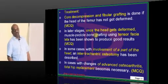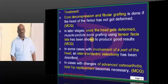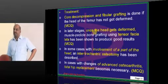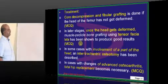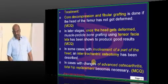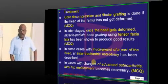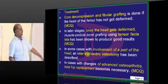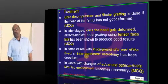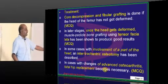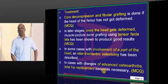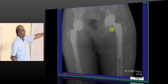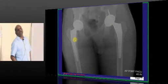In the late stages, when the head becomes deformed, you need to do a muscle pedicle bone graft in order to replace the necrotic bone, which gives good results. If there is advanced osteoarthritis due to avascular necrosis, replacement of the joint is considered to be the management. This is an example of bilateral avascular necrosis with a joint replacement.